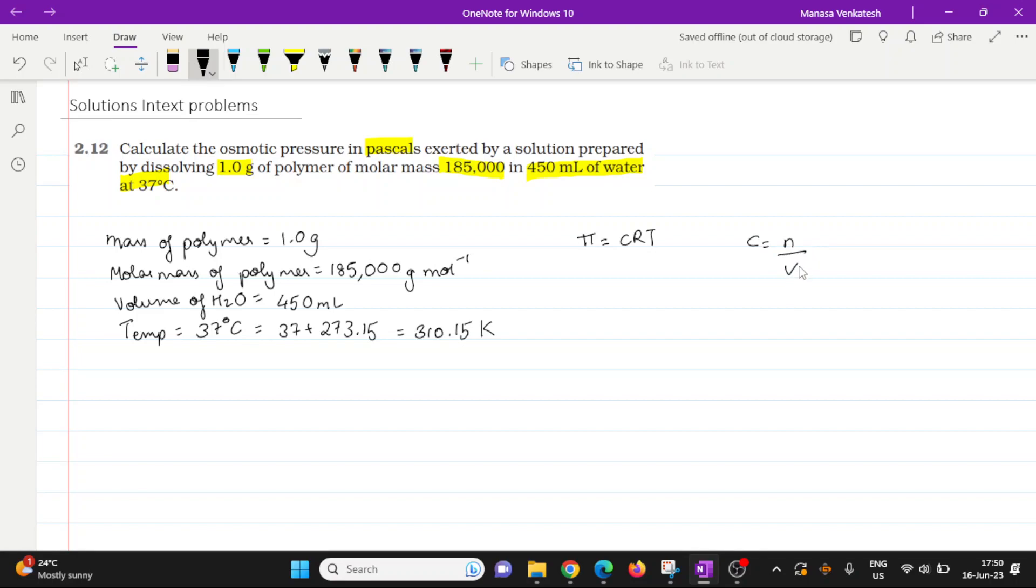Now we know C can be written as n, that is the number of moles divided by the volume, that gives us the concentration. So you can just say n divided by V into R into T.